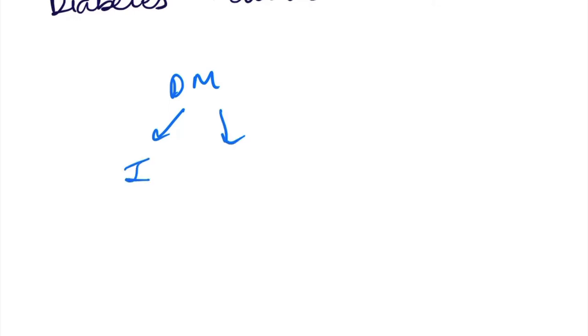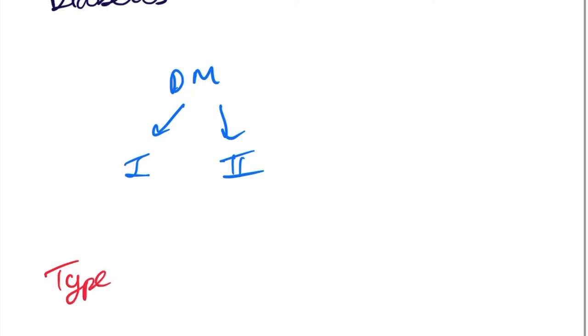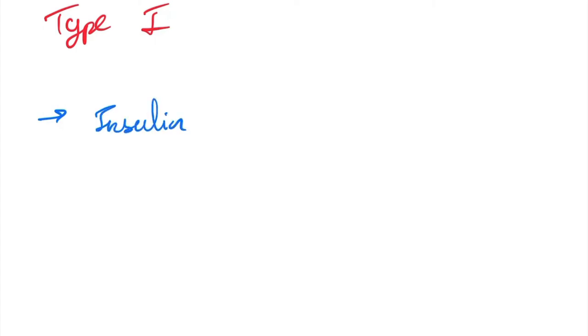It has two types, type 1 and 2. Type 1 diabetes is a metabolic disorder characterized by hyperglycemia due to insulin deficiency.